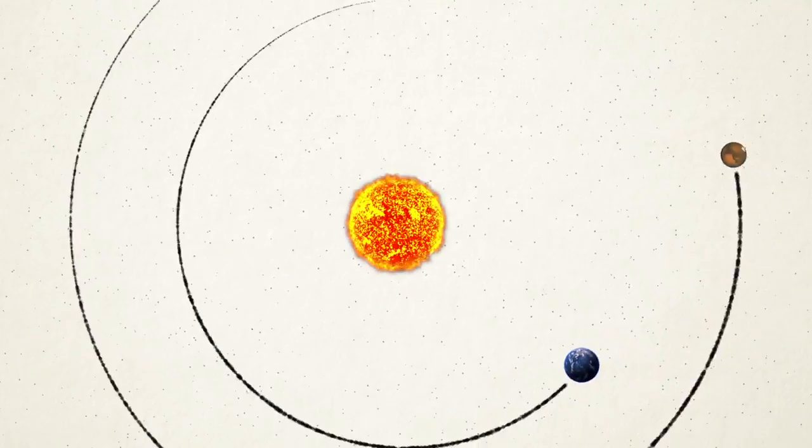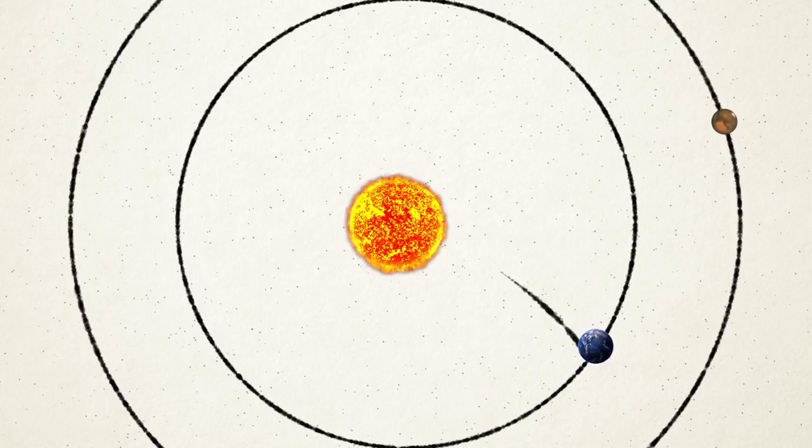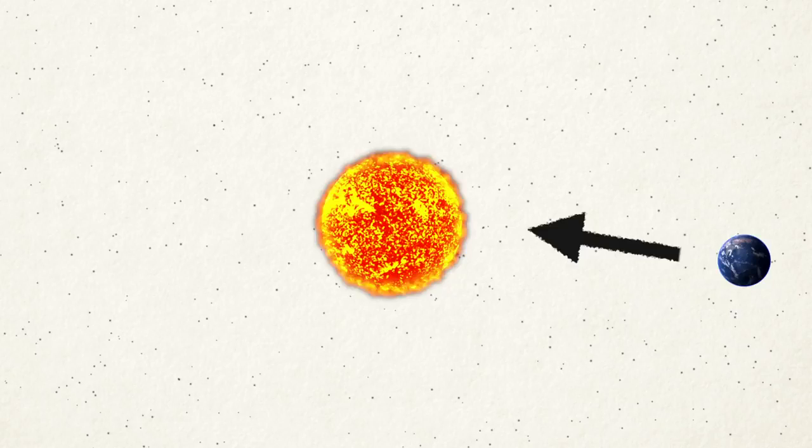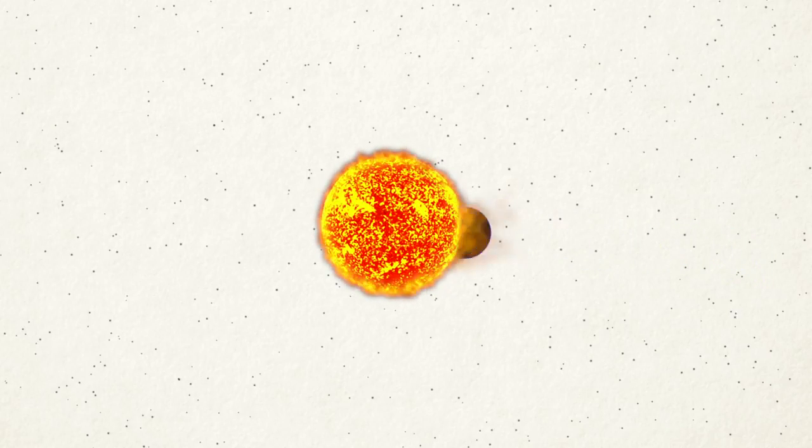It takes 55 times more energy to go to the Sun than it does to go to Mars. Why is it so hard to get to the Sun? The answer is related to why Earth doesn't just fall straight into the Sun, despite the strong gravitational attraction.